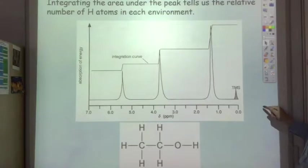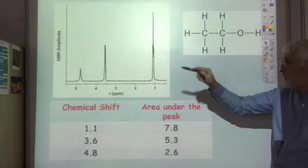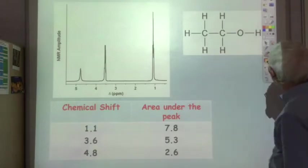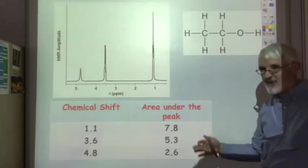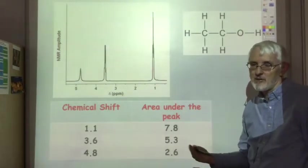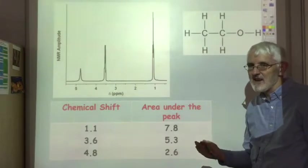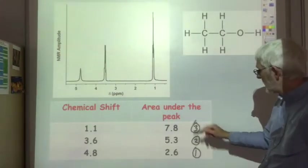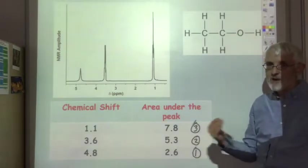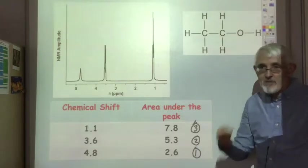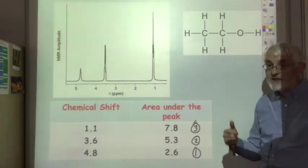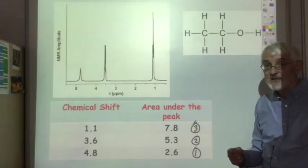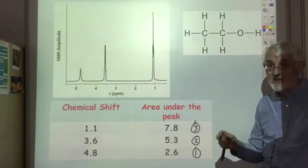Another way you might be presented with that same information is through a table. Instead of doing that little line drawing on the graph, it might give you a table in which you are presented with the area under each peak. Once again, you just divide through by the smallest number and you can round - if it's about 1.5 you wouldn't round that up to two, but if it's 1.9 you'd round that up to two. So that gives us one to two to three as before. So a very powerful tool, low resolution NMR. It gives us information about the environment of all the hydrogen atoms in your organic molecule, and it tells us or allows us to work out how many hydrogen atoms are in each environment.